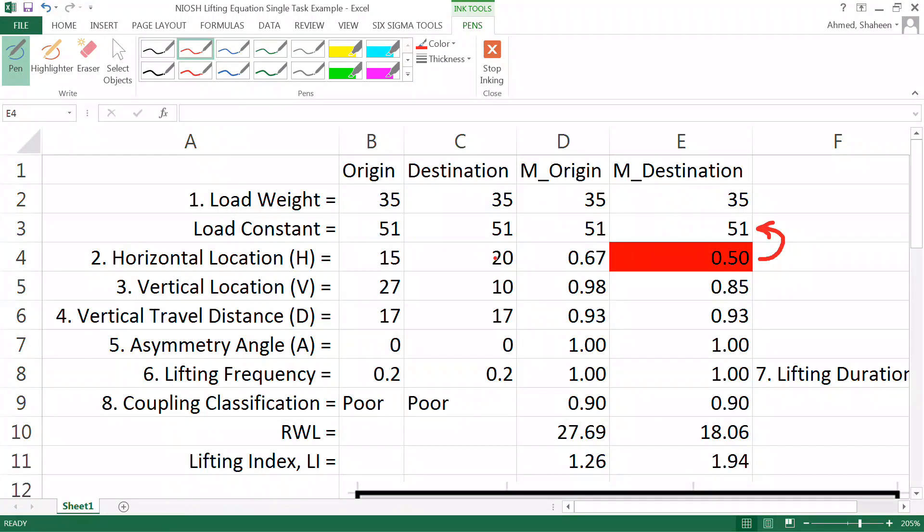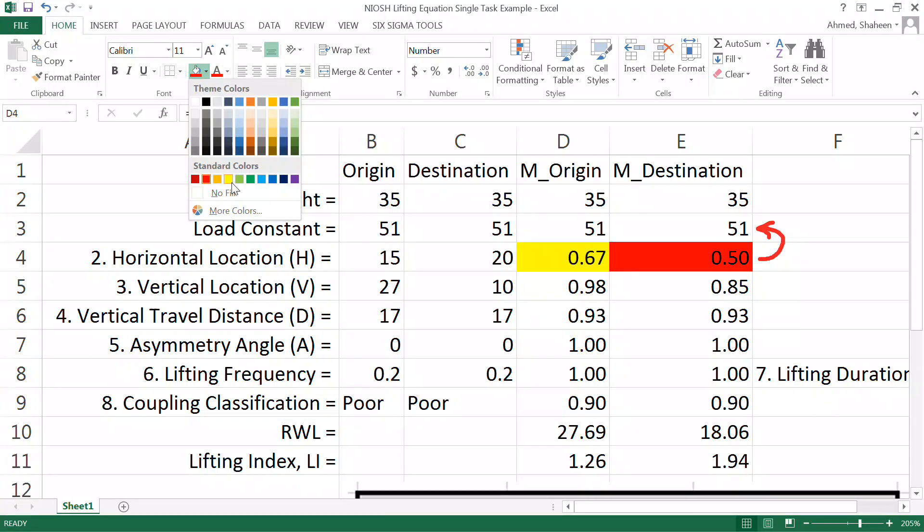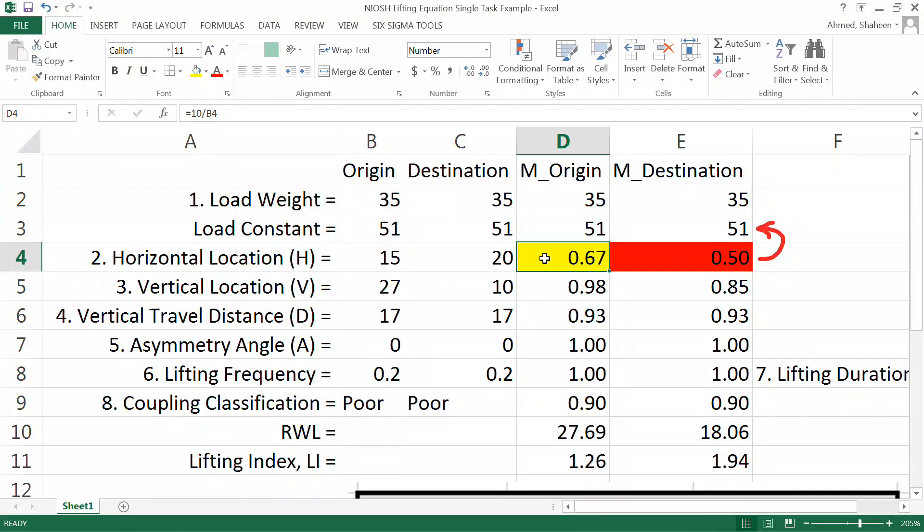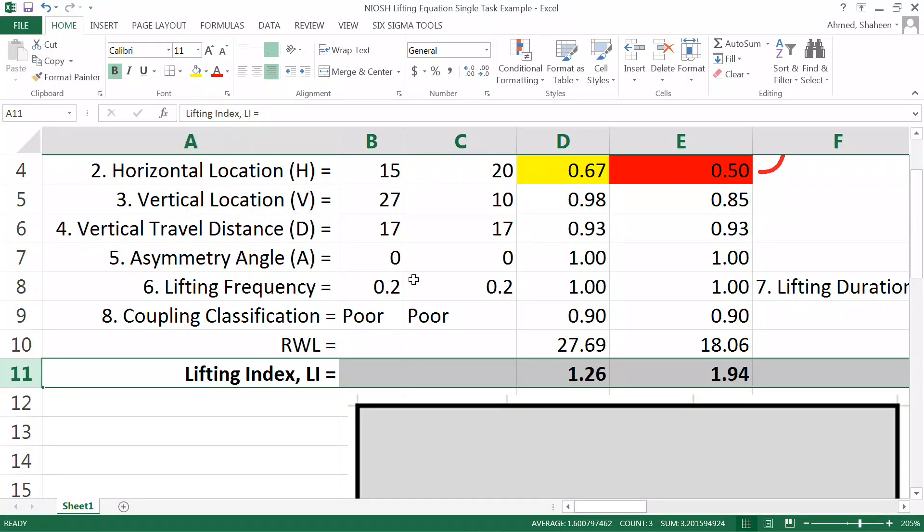The next thing you should fix is the horizontal location at the destination. If you can somehow bring it closer to the body, then it's going to help. As you can see, this lifting index is going over one, meaning that the job is potentially hazardous. Control should be considered for the job, especially at the destination.